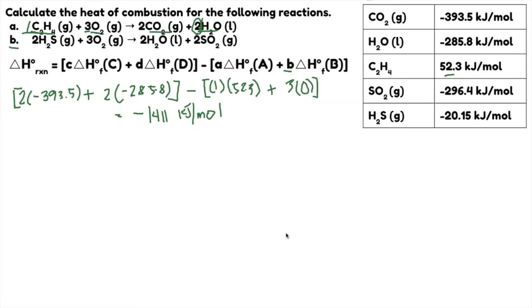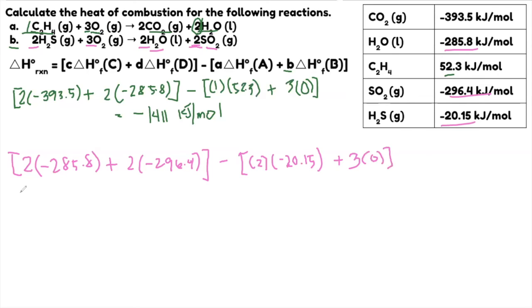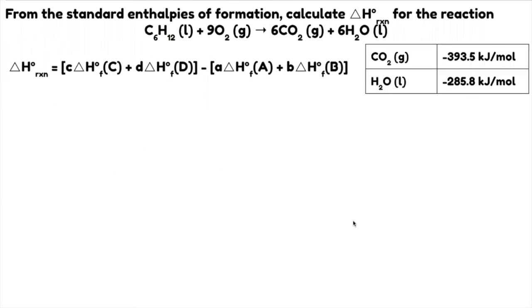Next, let's have B. So again, product minus reactant. This is 2. H2O is negative 285.8 plus 2SO2. So 2SO2 is this one, negative 296.4 minus reactants 2H2S. So write 2H2S is this, negative 20.15 plus 3O2. Again, it's 3 times zero. Solve. Try to solve this. You will get negative 1,124 kilojoules per mole. Why kilojoules per mole? Because everything is in kilojoules per mole and you're just subtracting. Very easy, right? Let's have the last example.